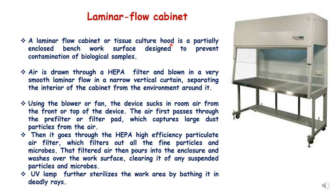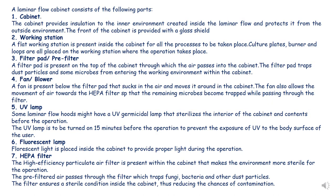A laminar flow cabinet consists of several parts. The first part is the cabinet itself, which provides insulation to the inner environment. The second part is the working station — a flat surface inside the cabinet where all processes take place. The third part is the filter pad or pre-filter present on the top of the cabinet, through which air first passes. The fourth part is the fan or blower, present below the filter pad, that sucks in air and moves it around the cabinet.